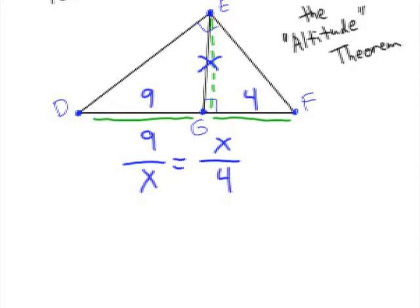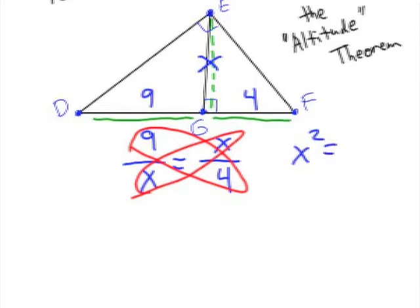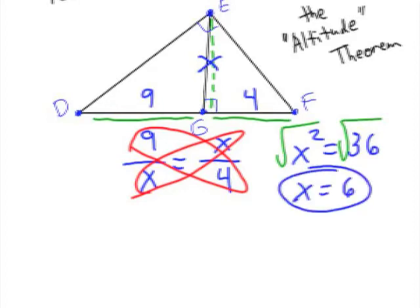Now we're going to cross multiply and solve. So X times X and 9 times 4. X times X is X squared. 9 times 4 is 36. We're going to take the square root of both sides. And of course my answer is going to be 6. So the altitude would have to be 6 units long.